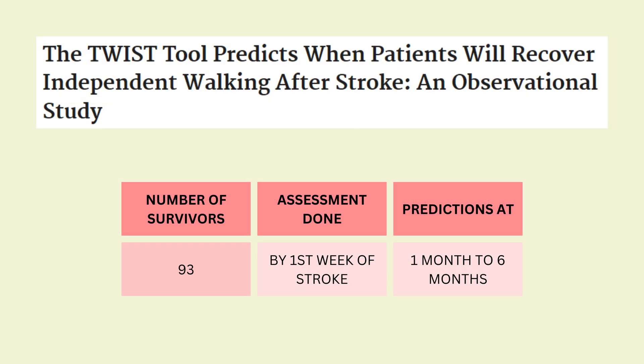This study, done in 2022, involves 93 stroke survivors. The assessment for outcomes was done in the first week of stroke onset, and the predictions that the algorithm made can extend up to 6 months — meaning that in the first week of stroke, the algorithm was able to accurately predict recovery up to 6 months ahead.